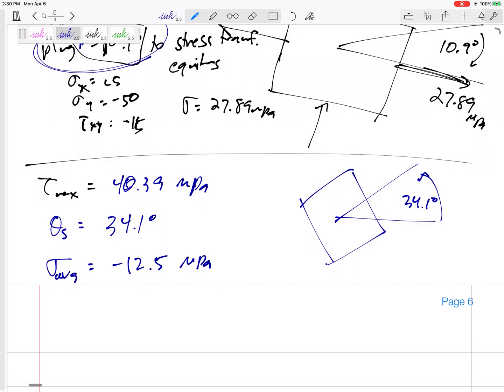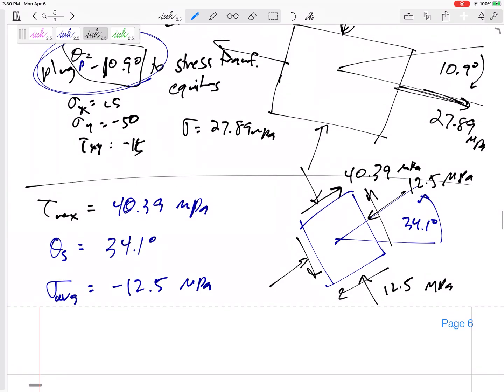And sigma average is negative 12.5 MPa. So let me sketch this. Let me sketch this. So this would be 34.1 degrees from my usual orientation. I would have a, whoops, this should be a compressive, 12.5, 12.5. I would like you to label them in two places, but then the opposite side is going to be the same. And then a shear stress. And I haven't gone into positive and negative. So a shear stress of 40.39 right there.